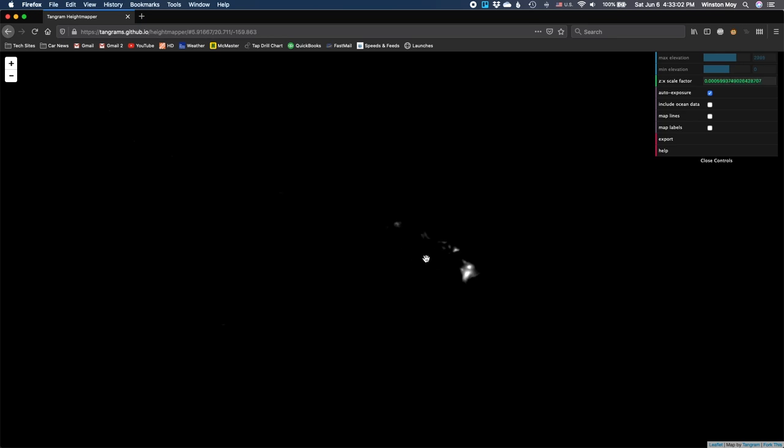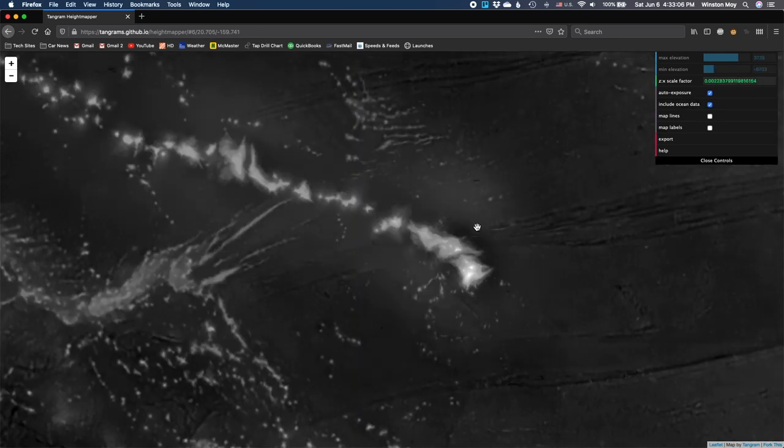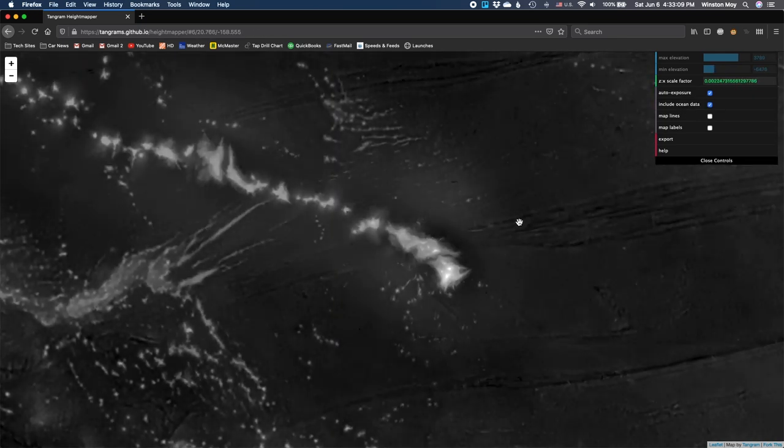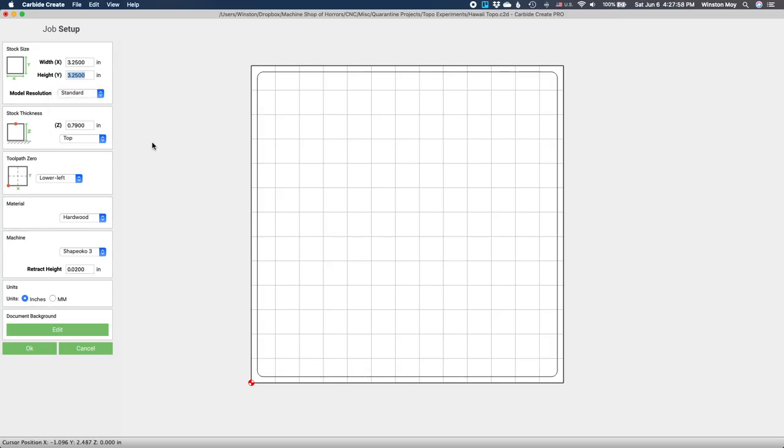Over on the Tangrams height mapper app, I saved a grayscale height map of Hawaii, including the surrounding ocean floor. Then I cropped this image to a square aspect ratio so I could bring it into Carbide Create easily.